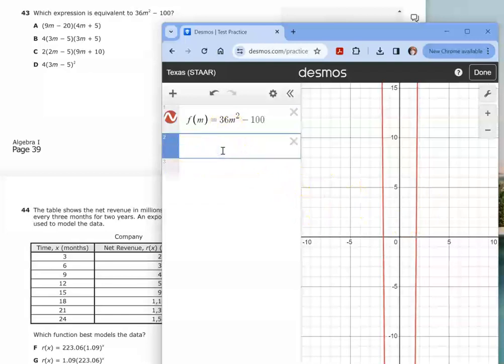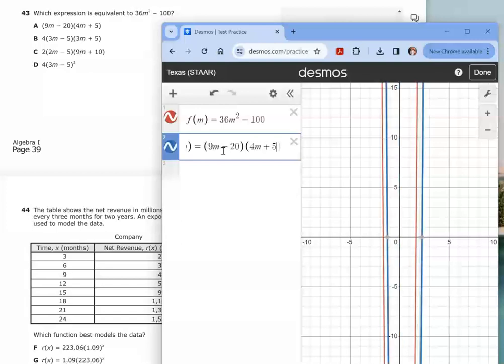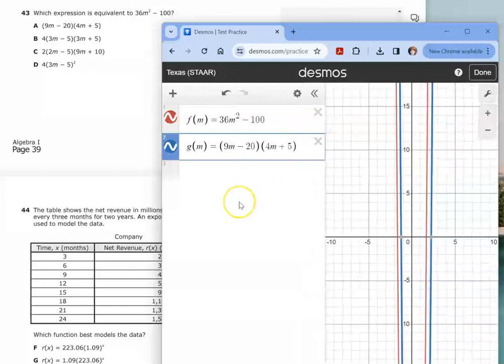So I'm just going to leave that alone and go ahead and type in the first answer choice. You can type F of M again, but to make it different, let's use a different letter. Let's call this one G of M. And we'll type in the product of two binomials, 9M minus 20 and 4M plus 5. You'll notice the blue graph and the red graph do not coincide. So that's telling you that this expression is not equivalent. If they were equivalent, it would produce the same graph.